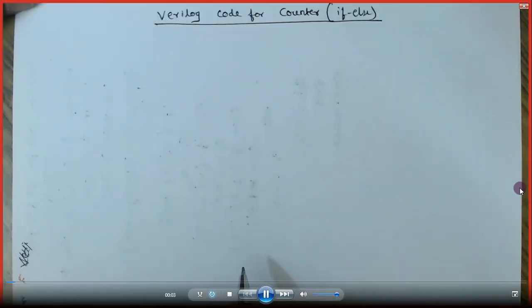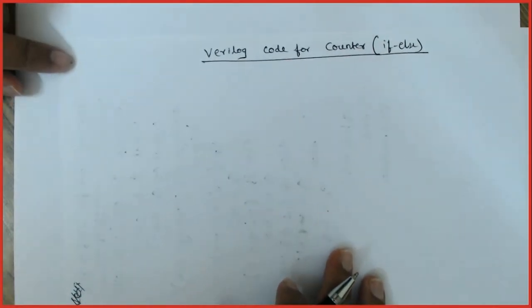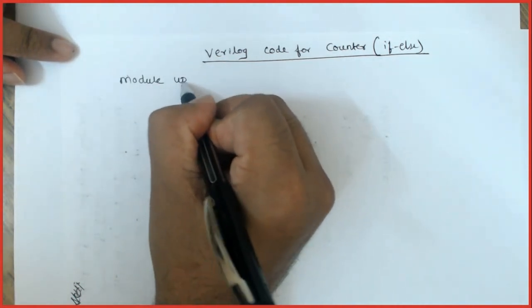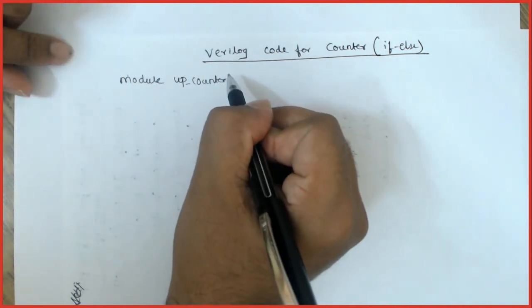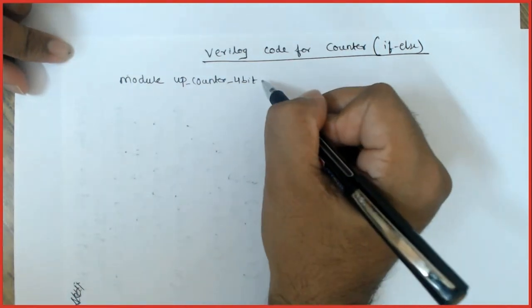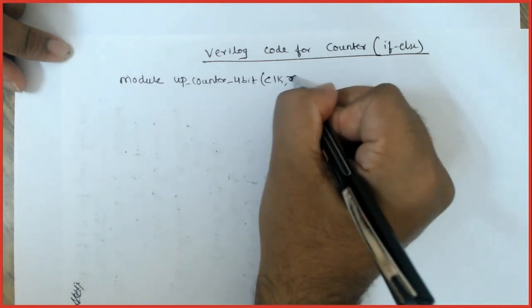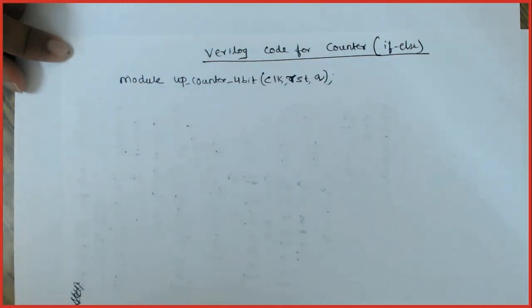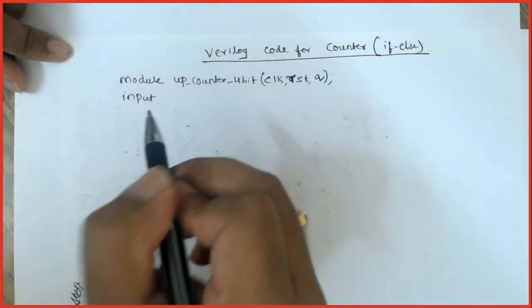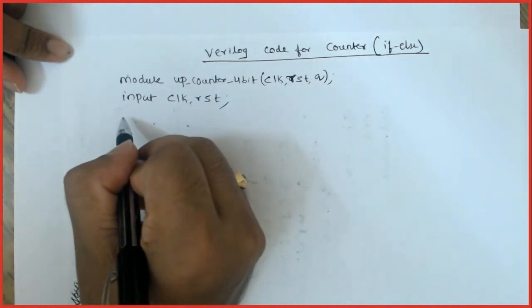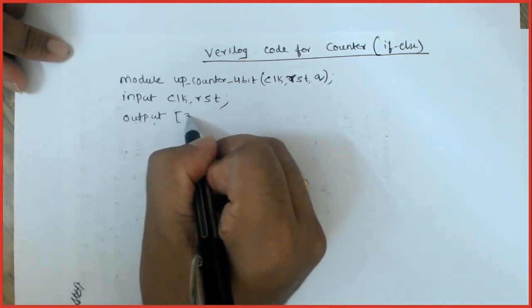Now we'll see how to write a Verilog code for a counter, 4-bit up counter. This is how it is written: module up_counter_4bit. This is the name I'm giving. Clock is one of the inputs, reset is one of the inputs, and Q is one of the outputs. My inputs being clock and reset, and the outputs being [3:0] Q.